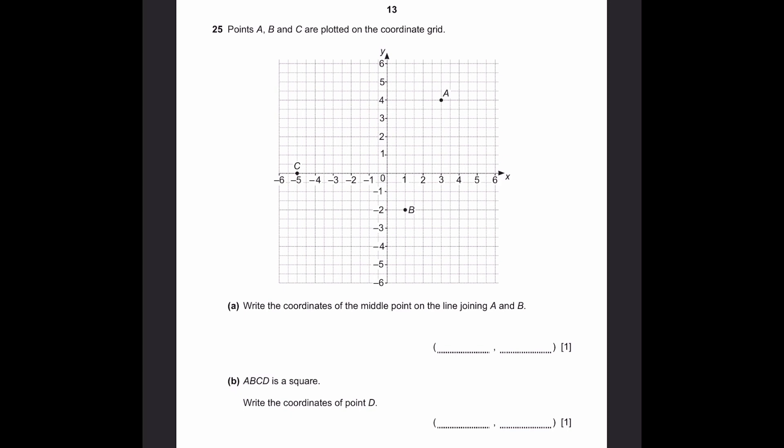Question 25. Points A, B, and C are plotted on the coordinate grid. Part A: Write the coordinates of the middle point on the line joining A and B. So first, to find the coordinates, the simplest way is to draw the line.